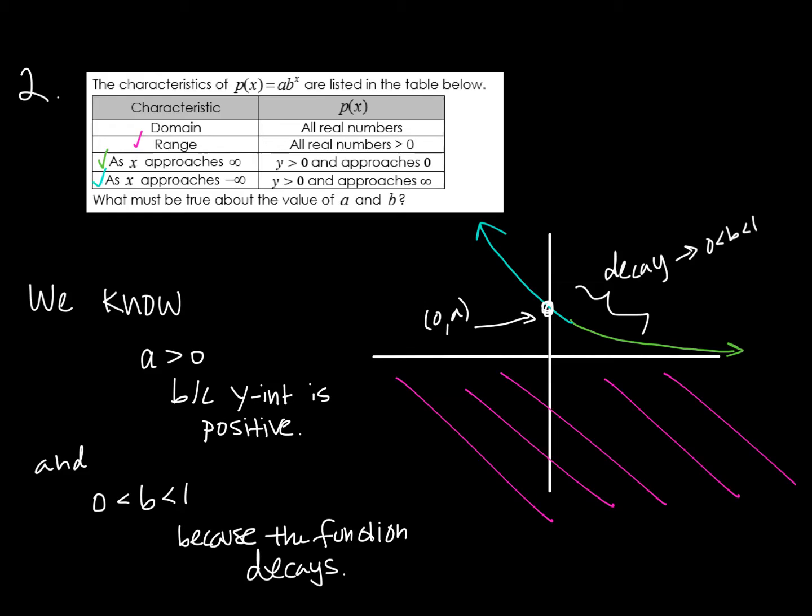Once I've done that, it's pretty easy for me to define what a and b have to be. The a value has to be positive. The y-intercept has to be positive. So a has to be greater than zero. And we know this is an exponential decay function, so the base has to be between zero and one.